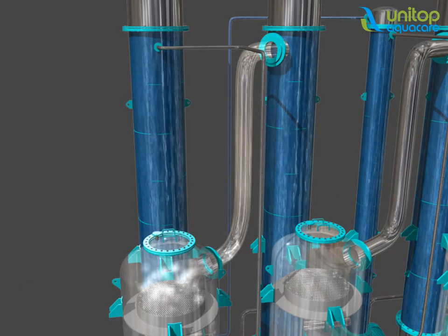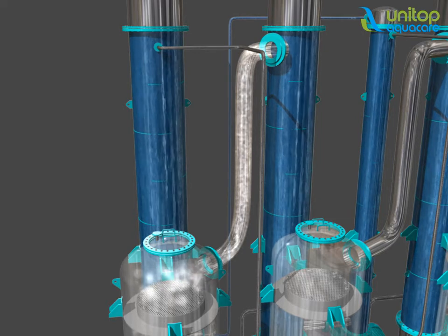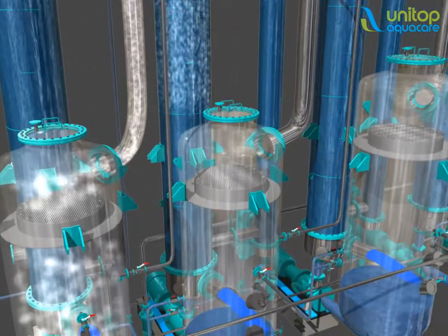The vapors generated by flashing of the liquid are taken to the next effect due to the lower pressure and used for evaporation in the next stage.